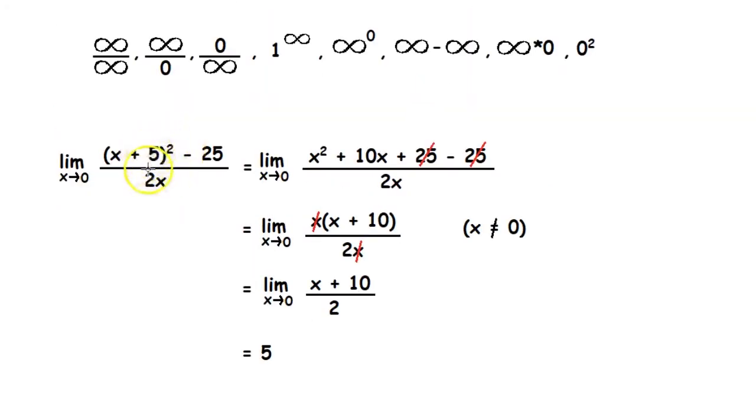If we take the same example as before, we can first open the bracket. This gives us x² + 10x + 25 - 25 divided by 2x. So then we can cancel off 25 and also take x common from these two terms. That would be x(x + 10) divided by 2x. Now we can cancel off the common x from the numerator and denominator.